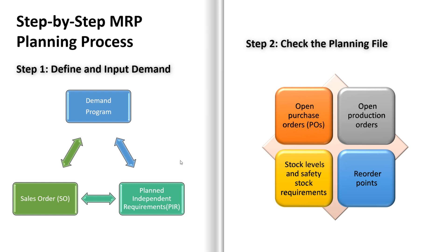Next, check the planning file. Before running MRP, SAP checks the planning file to identify which materials need planning and which don't. The planning file keeps track of materials that require MRP based on open purchase orders, open production orders, stock levels, safety stock requirements, and reorder points.